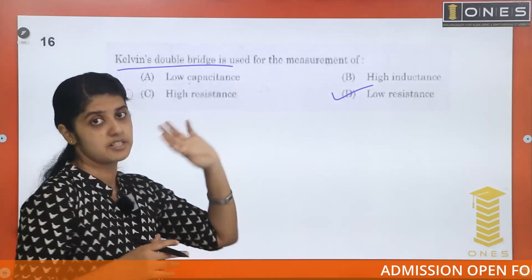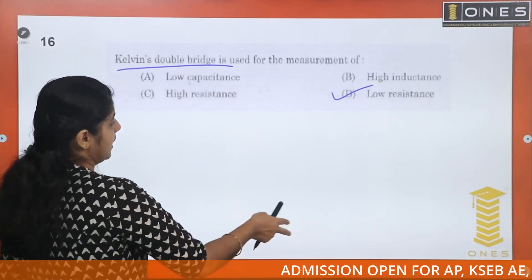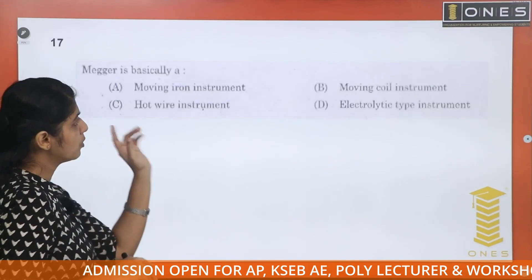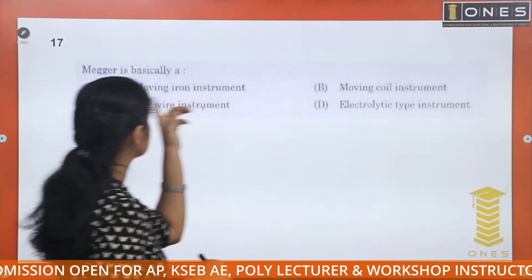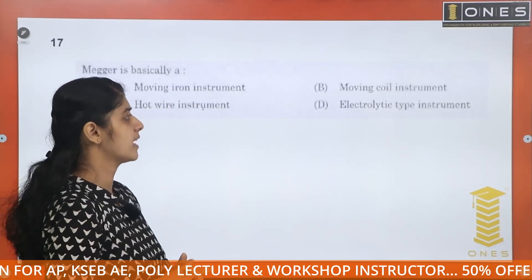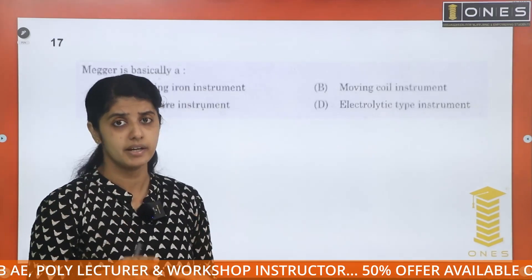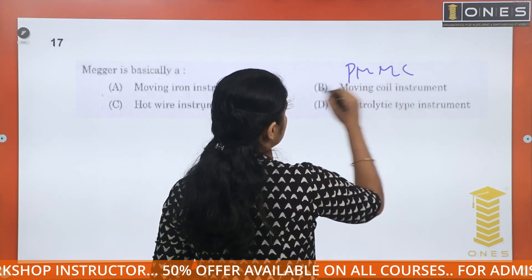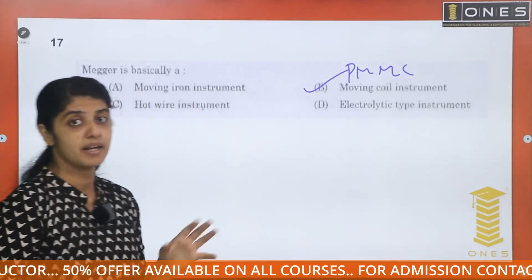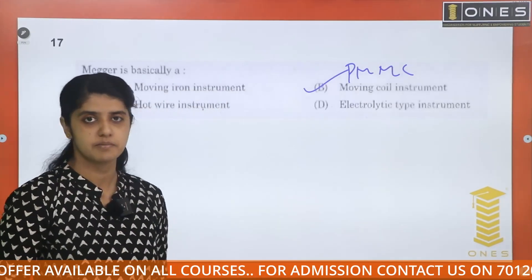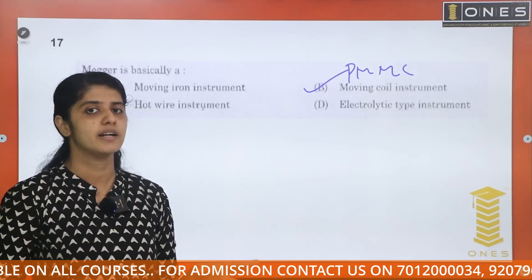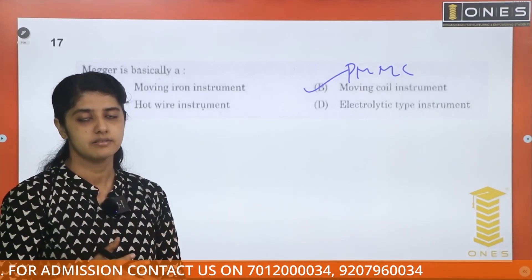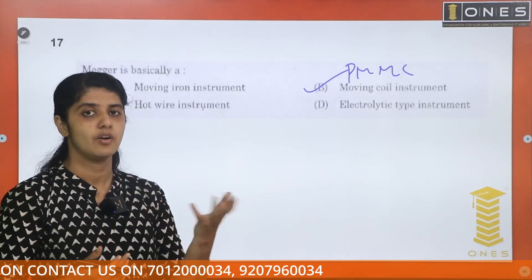Megger is basically a PMMC — permanent magnet moving coil — instrument. Megger is used for high resistance measurement in mega-ohms range. That covers the inductance measurement bridges; next question is about Megger.